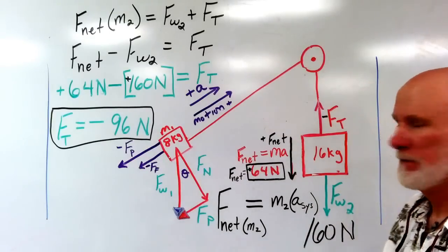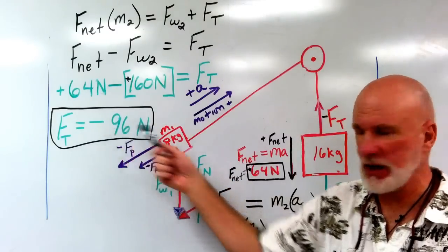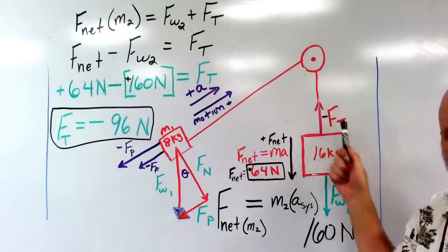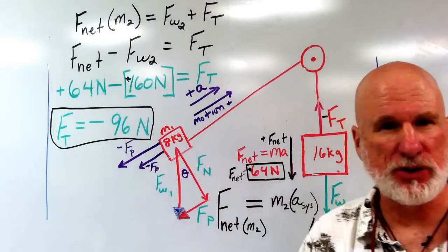So part two, the tension in the string, Ft, is negative 96 newtons.